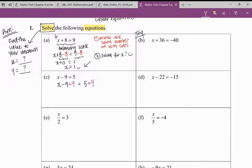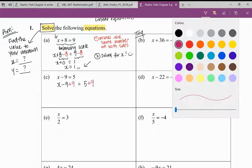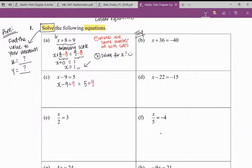Because that's the only way to get rid of negative 9. So I plus 9 on both sides. This part here I'll get 0, and then 5 plus 9 is 14. So x is 14.